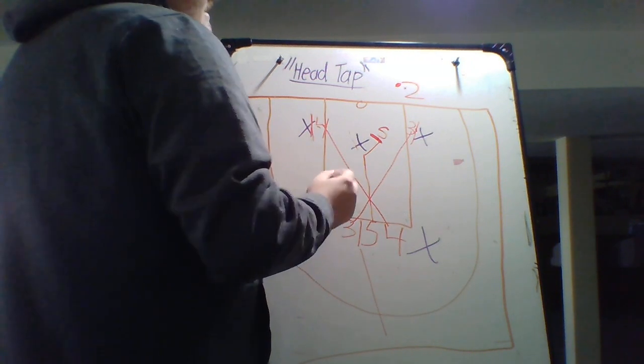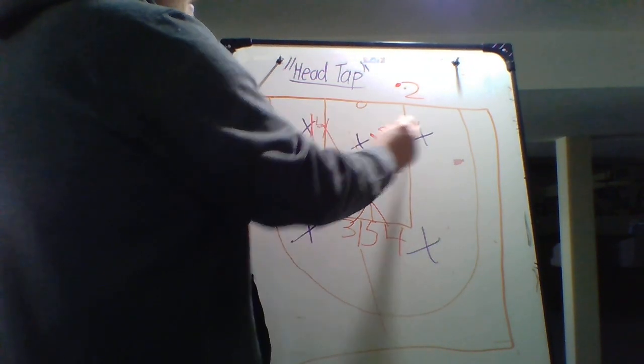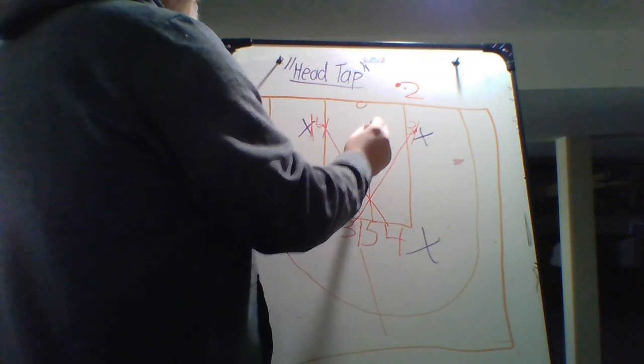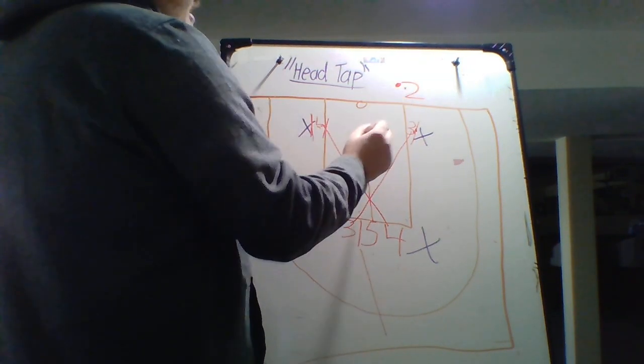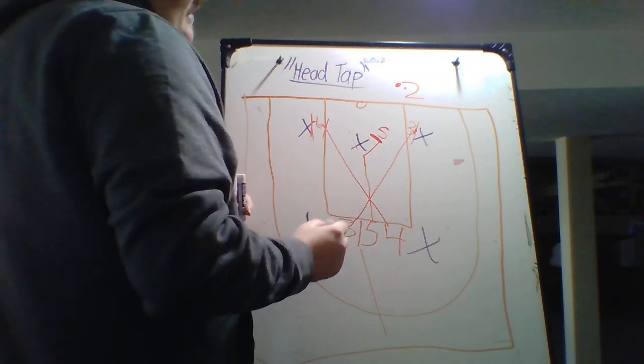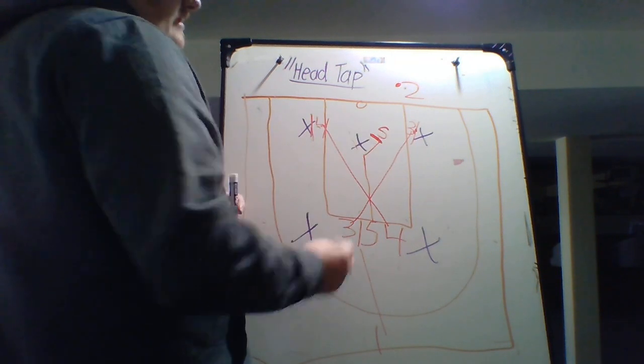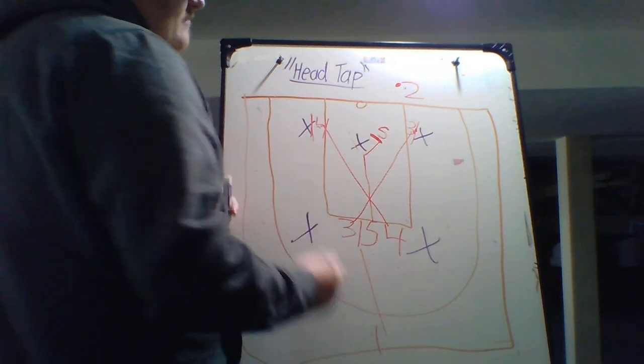The important thing is if it's a pass to one of these, the three or the four, we probably want a bounce pass. If it's to the five right here, we probably want a chest pass, something simple. And then the one is just hanging out as a safety because if none of these are open, then we're going to pass it out to the top and we're going to reset.